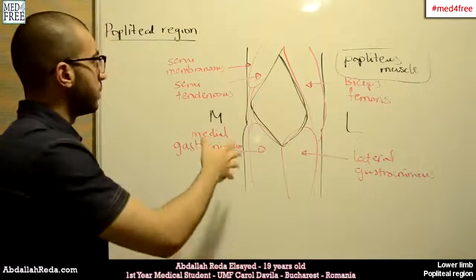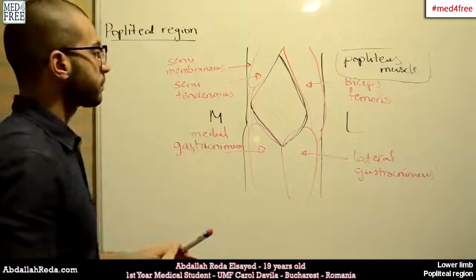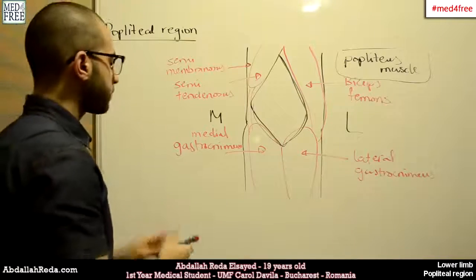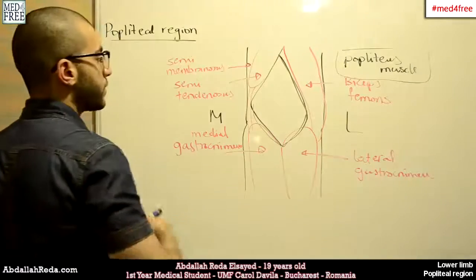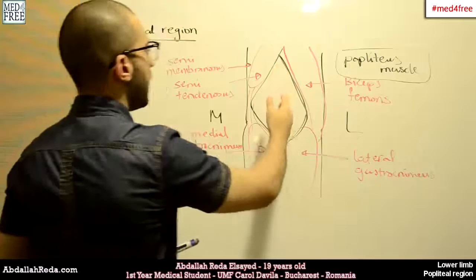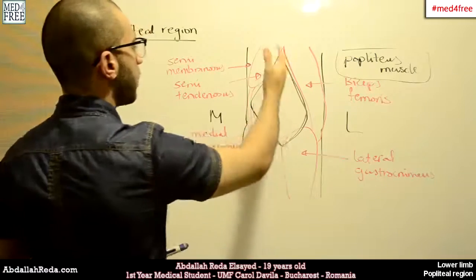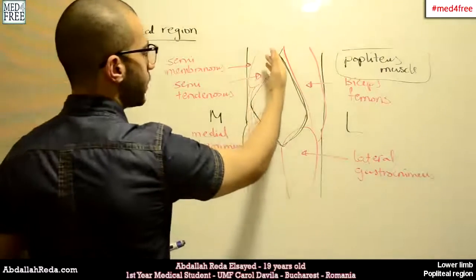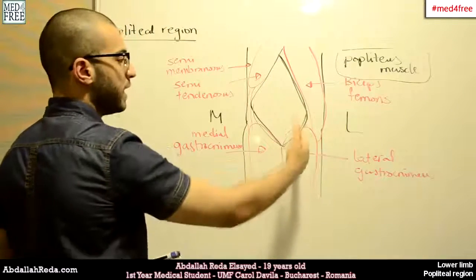Now the contents of the popliteal region. We also have a bundle which is formed by a vein, an artery, and a nerve. So they are arranged like that. We have the artery most medially, then the vein, then the nerve. And they are on the upper part, they are mostly medial and anterior, and then they start to go laterally and posteriorly when they descend.